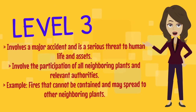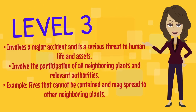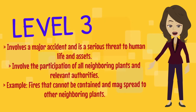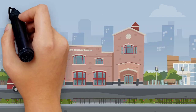A Level 3 emergency involves a major accident and is a serious threat to human life and assets. It involves the participation of all neighboring plants and relevant authorities. An example of a Level 3 incident is a fire that cannot be contained and may spread to other neighboring plants.